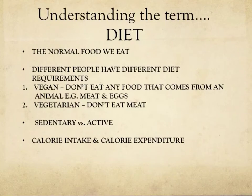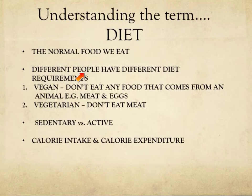So, what is diet? Diet is essentially the normal food we eat on a daily basis. However, different people have different diet requirements, and this will become a lot clearer as we go through the presentation. You will understand the seven factors that contribute to a balanced diet. On the slide in front of you, you will notice that I have identified two types of specific diet. These are vegans and vegetarians.